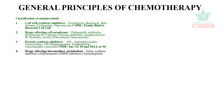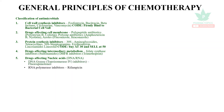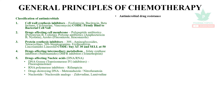Four: drugs affecting intermediary metabolism — Folate synthesis inhibitors: Sulfonamides; Dihydrofolate reductase inhibitors: Trimethoprim. Five: drugs affecting nucleic acids, that is DNA or RNA. DNA gyrase inhibitors and Topoisomerase 4 inhibitors: Fluoroquinolones. RNA polymerase inhibitors: Rifampin. Drugs destroying DNA: Metronidazole, Nitrofurantoin. Nucleotide/Nucleoside analogues — antiviral drugs such as Zidovudine, Lamivudine. That is the idea of the five categories of antimicrobial classification.